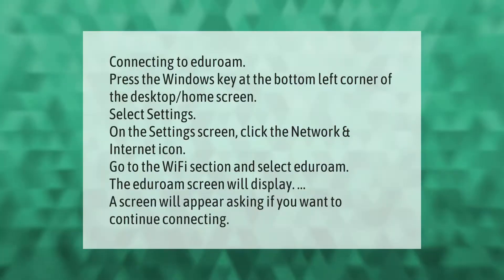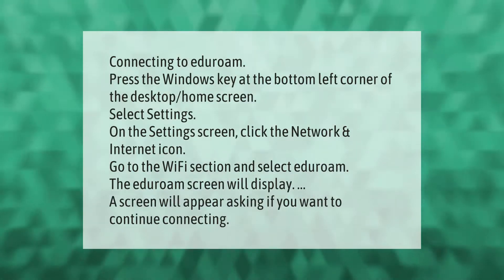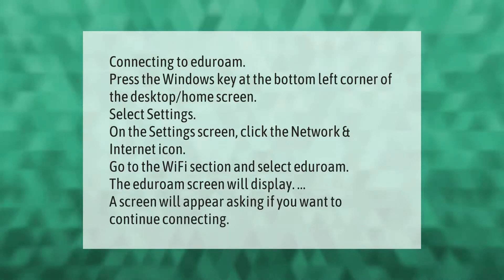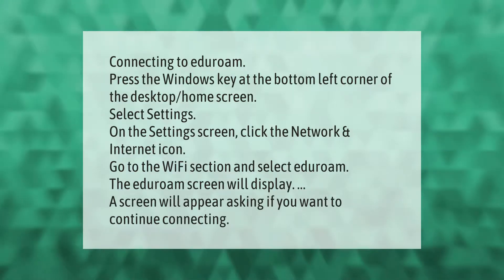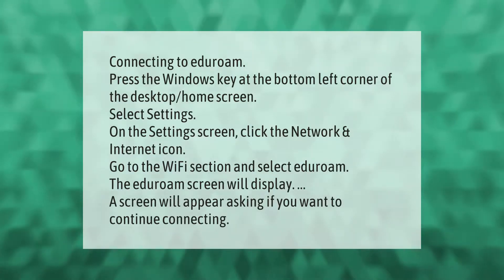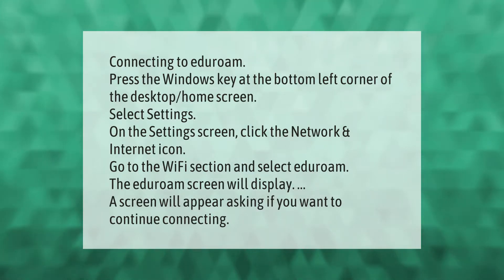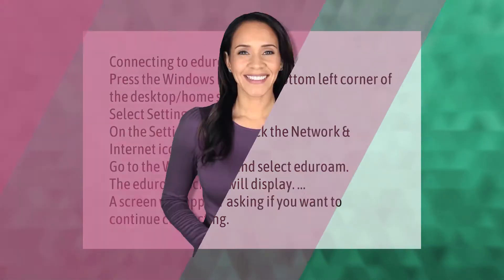To connect to eduroam, press the Windows key at the bottom left corner of the desktop home screen and select Settings. On the Settings screen, click the Network and Internet icon and go to the Wi-Fi section. Select eduroam. The eduroam screen will display, and a screen will appear asking if you want to continue connecting.